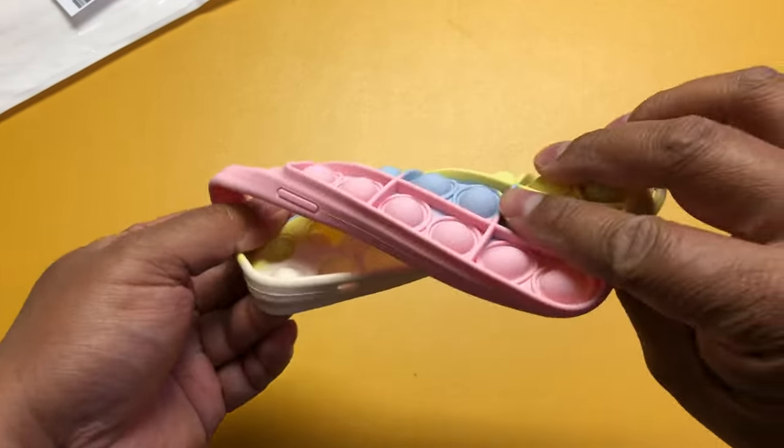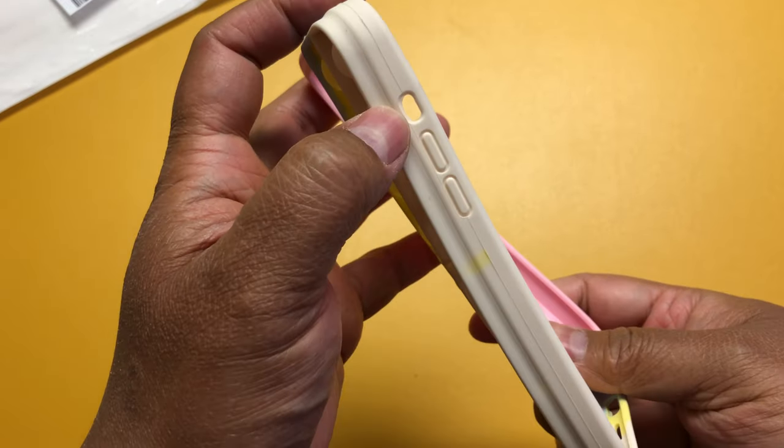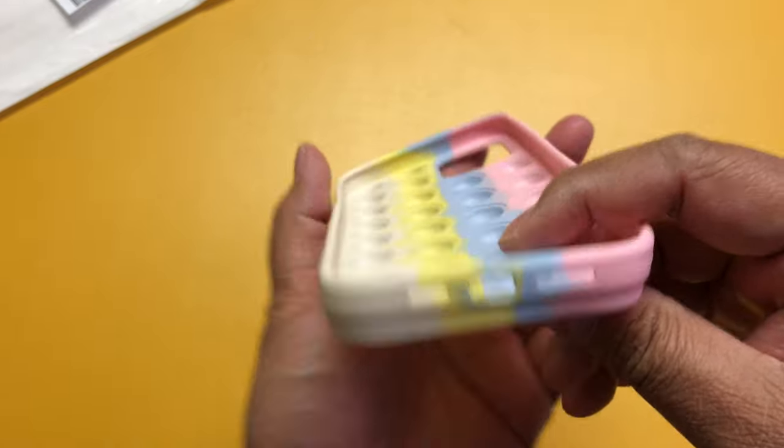So this is very soft. You can see it's easily twistable and everything. It's got a cutout for the silencer and the ports on the bottom.